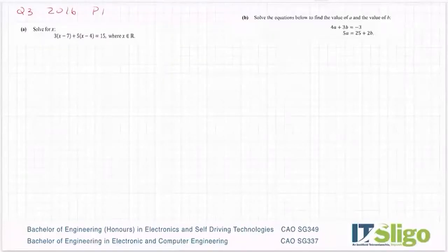Let's have a look at the 2016 question. It was question 3 on paper 1: solve for x: 3(x - 7) + 5(x - 4) = 15. Solve always means you're looking for whatever your variable x equals, whatever your answer is.